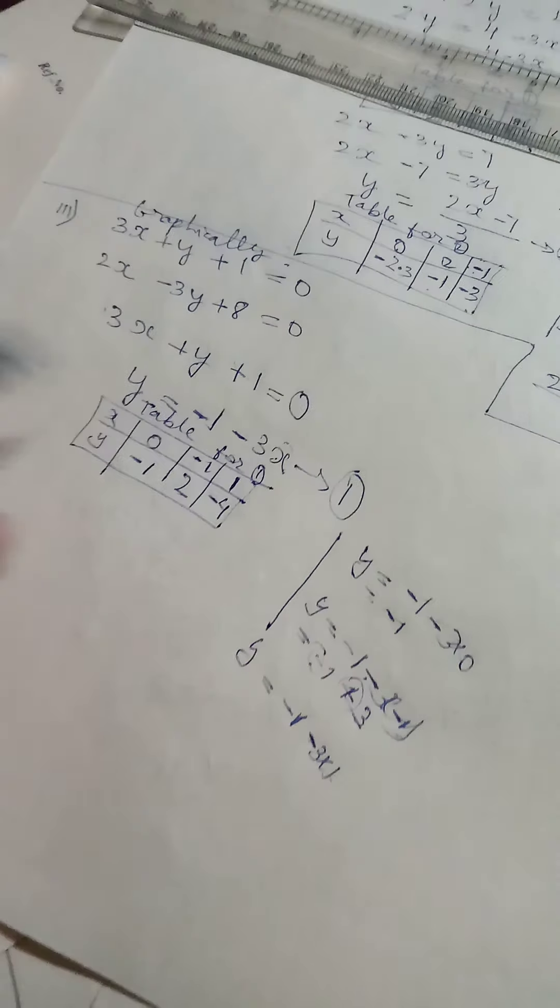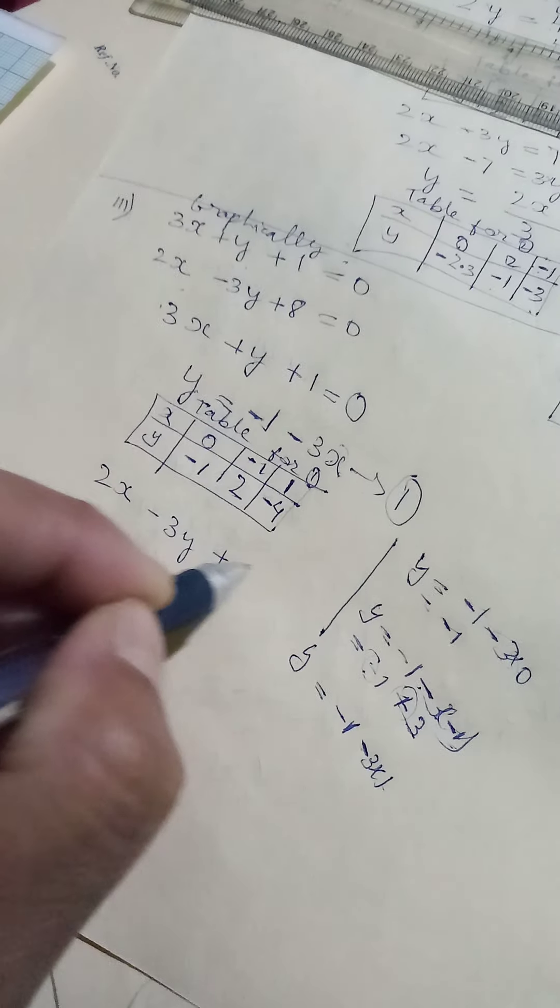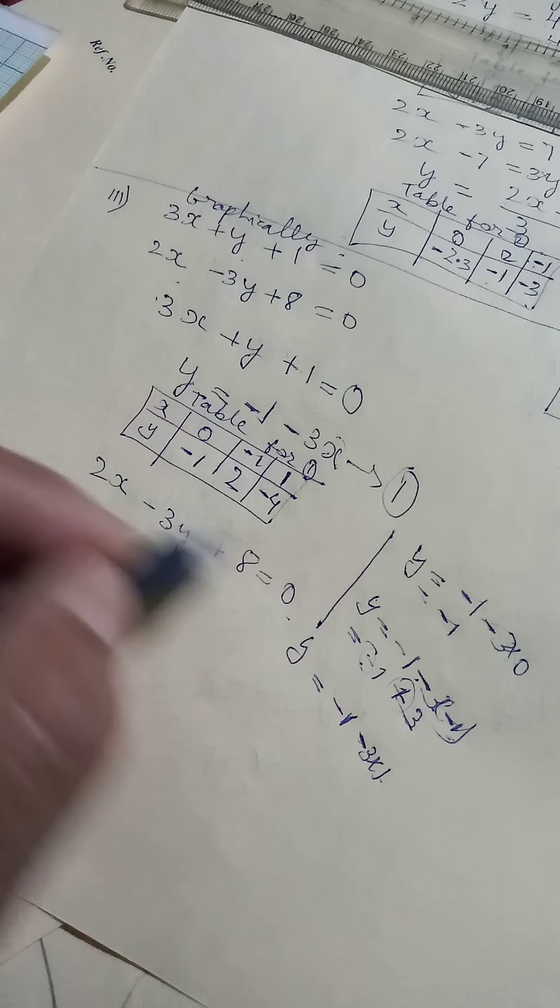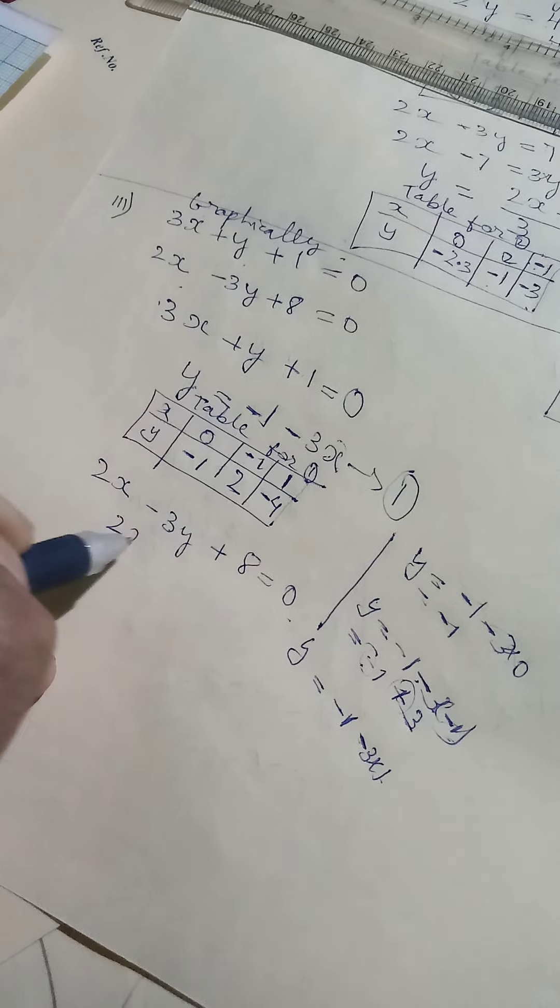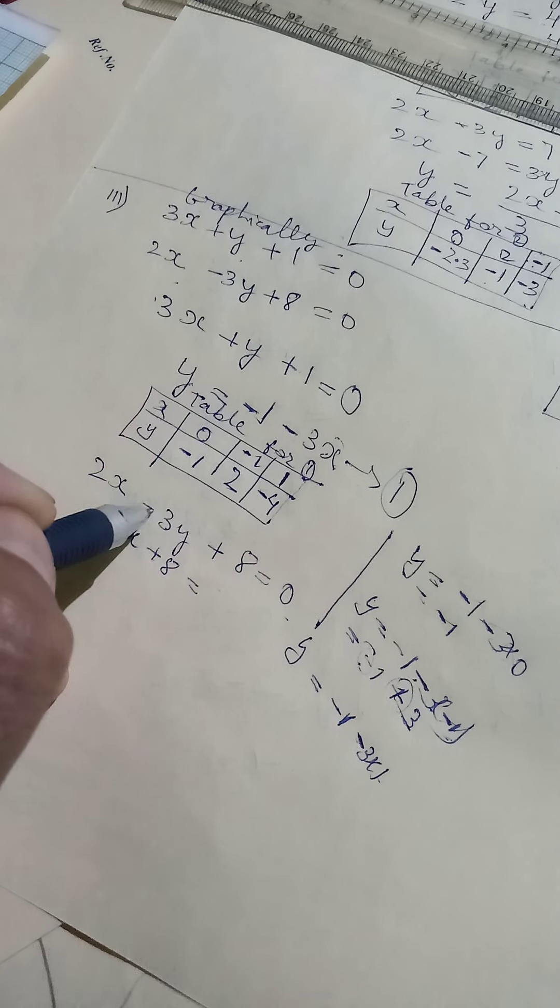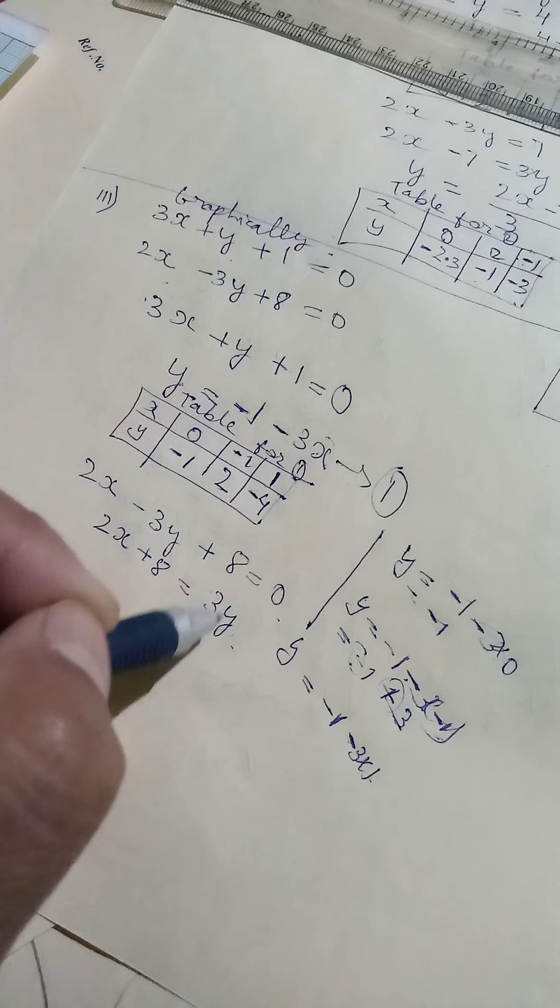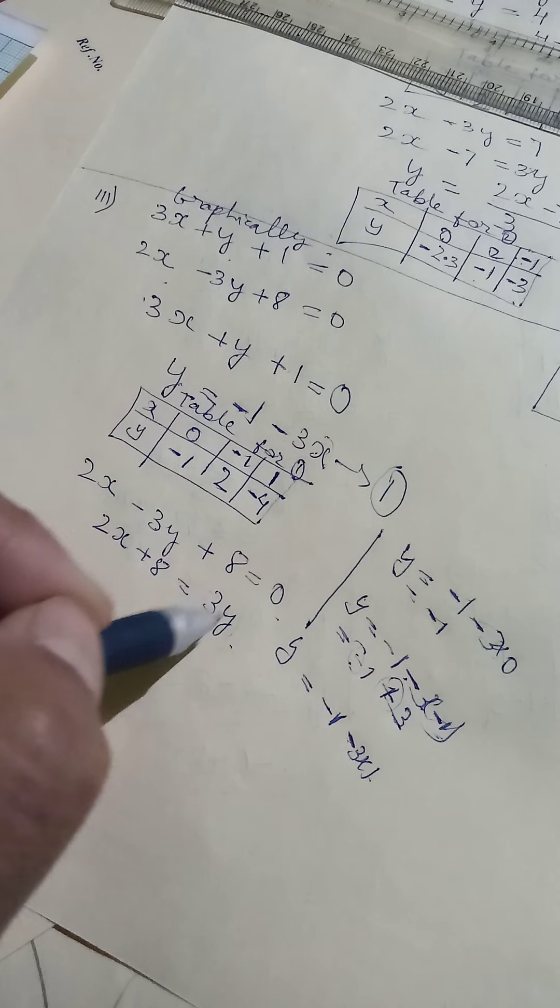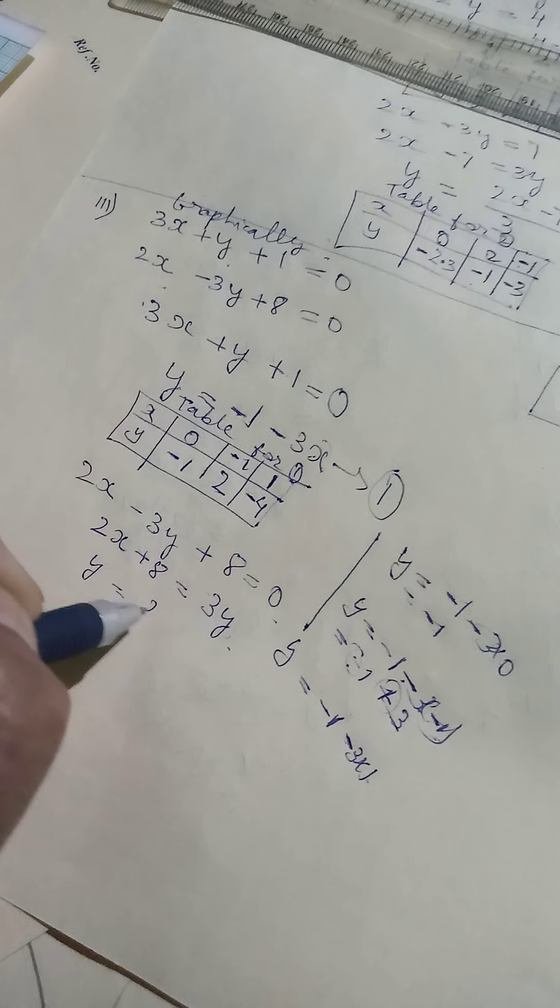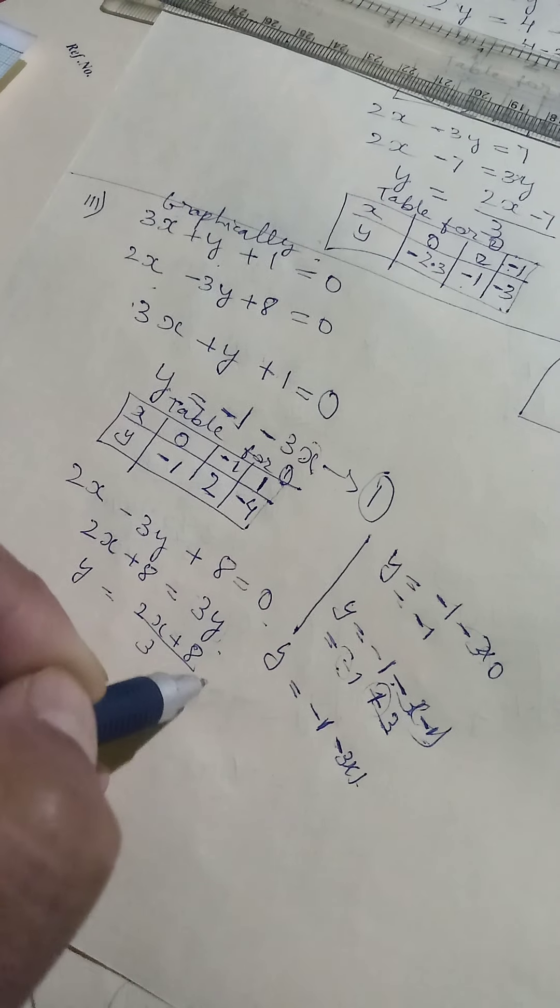So let us take the second one, also same. We will try to separate X and Y. Here Y is minus, so let us take this one the other side. So 2X remains same, plus 8 also remains same. This is minus, on transfer that side it will become plus. We want only Y, so this 3 which is together with Y, we can divide the other side.